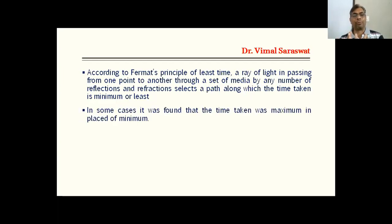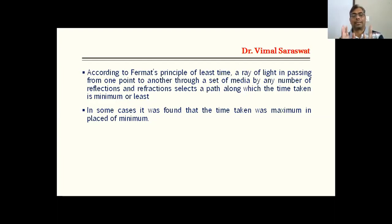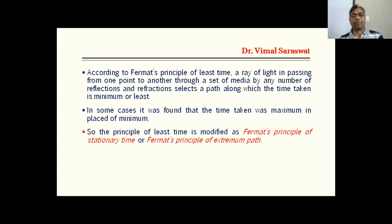But it is found that in some cases the time taken was maximum instead of minimum. This means the ray of light selects a path in which the time taken is either minimum or maximum, but the time can never be in between these two. So the above principle is modified into a new form — the Principle of Least Time is modified as Fermat's Principle of Stationary Time, or Fermat's Principle of Extremum Path.